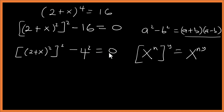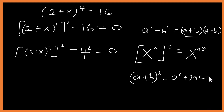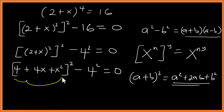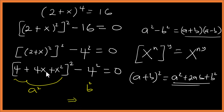So now we have (2 + x)² minus 4² equal to zero. Now expanding (2 + x)², using (a + b)² = a² + 2ab + b², this side is 2² + 2×2×x + x², which gives us 4 + 4x + x². Then we subtract 4² which is 16.